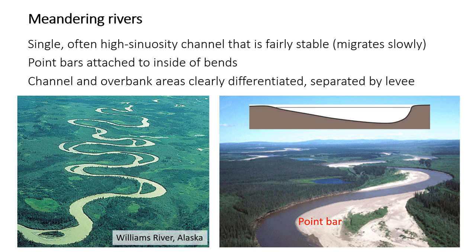The other major category of river morphology is the meandering river, named for its highly sinuous channel that meanders back and forth in big sweeping bends. Meandering rivers mostly have a single channel largely confined within pretty stable banks. The channel does move — that's the meaning of meandering — but it's not nearly as unpredictable or as chaotic as braided rivers. Because the channel is quite stable, the overbank area outside the channel is clearly separated, and there's often even a raised bank called a levee at the edge of the channel. This sharp differentiation between the higher-energy channel and the lower-energy overbank sediments is really a major and characteristic feature of meandering rivers.